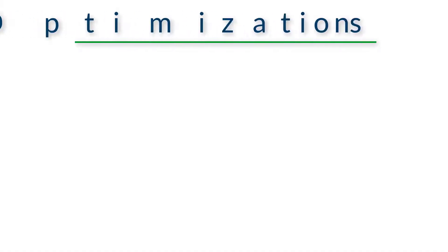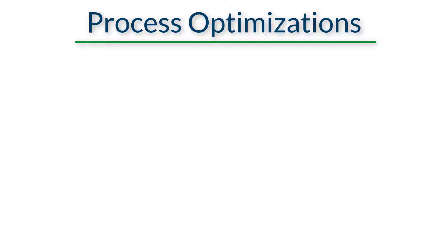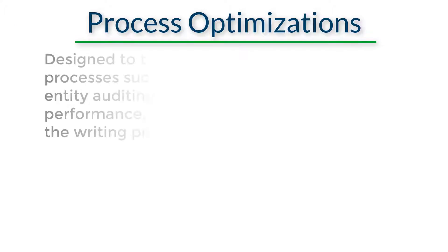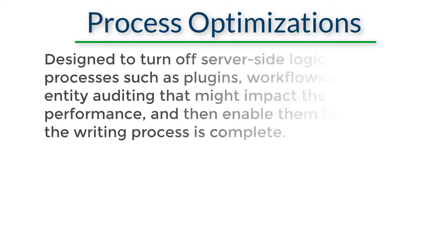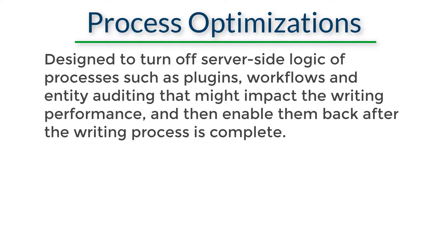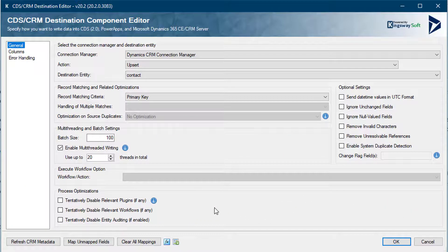Process Optimization is designed to turn off any server-side logic or processes, such as workflows or plugins, that could impact your writing performance. This is a long-awaited feature and will have significant performance gains when writing data to your particular entity in your CDS or CRM environment.